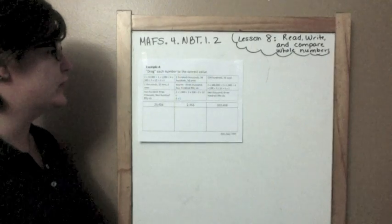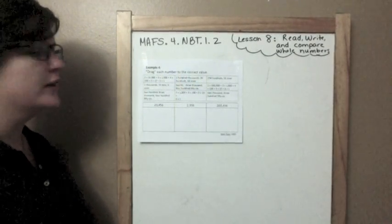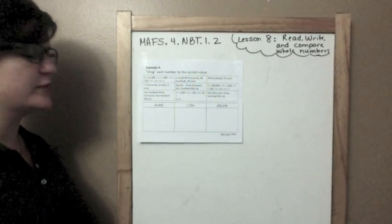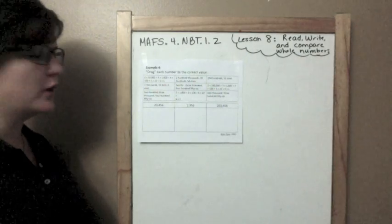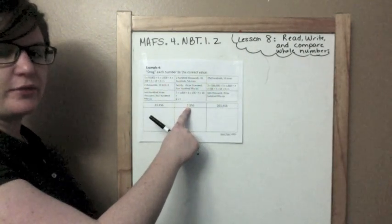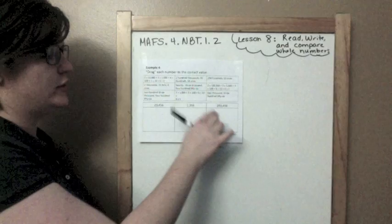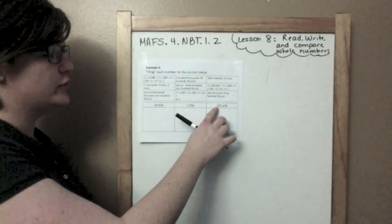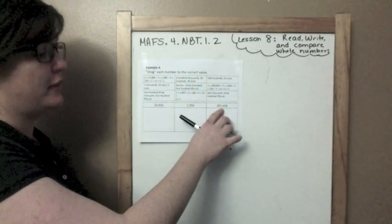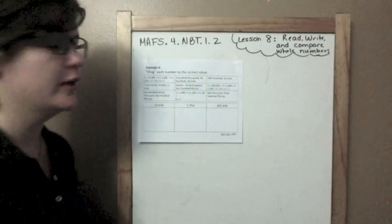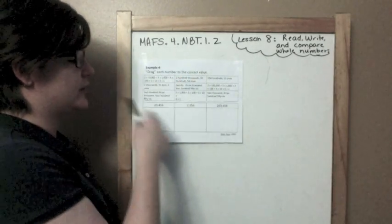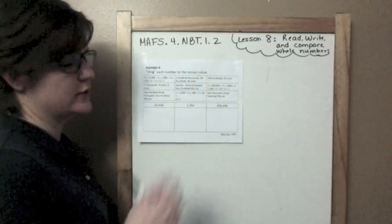Alright, drag each number to the correct value. So we see 23,456, 2,356, and 203,456. I've got all these numbers up here that need to go into the correct column.